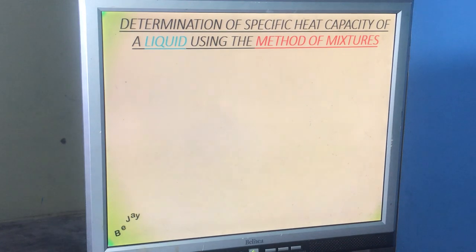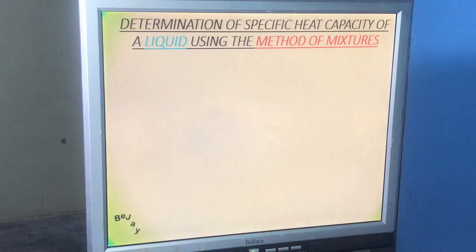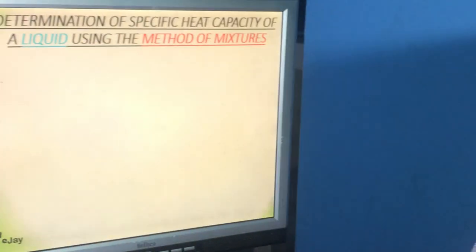We look at the determination of specific heat capacity of a liquid using the method of mixtures. There are many methods: the method of mixtures, the continuous flow method, the cooling method using Newton's law of cooling, and the electrical method. The best among them is the continuous flow apparatus.